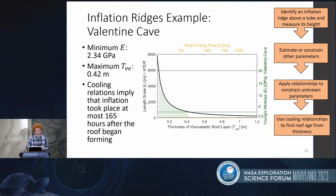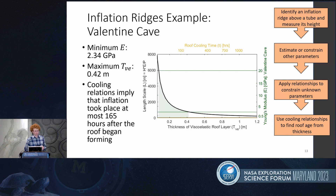Combining these values, I used the constraints I had on some parameters to constrain the others. The green area shown at right represents the range of possible conditions I found. I found the minimum Young's modulus possible for this tube to be 2.34 gigapascals and the maximum effective roof thickness to be 0.42 meters. Applying the cooling relationships, this maximum effective roof thickness translated into a roof age of approximately 165 hours, telling us that inflation of this particular tube must have happened within the first 150 hours or so after the roof began forming.